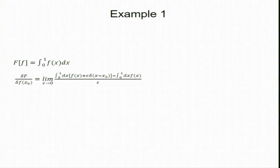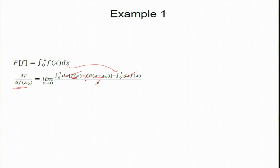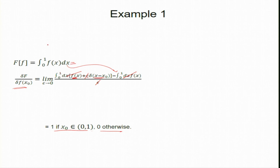Let me illustrate with examples. First example: the functional F = integral from 0 to 1 of f(x) dx. I want to compute the functional derivative at x₀. By definition I create g(x) = f(x) + ε δ(x − x₀), subtract the original, and find that the ε cancels; I get a delta-function integral which equals 1 when x₀ is within [0,1] and 0 otherwise. So the functional derivative is 1 if x₀ ∈ [0,1], else 0. A lazy but useful shortcut: just go inside the integral and take the derivative, which also gives 1.